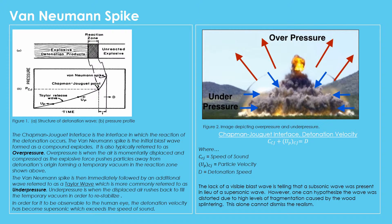First, what is an explosion? An explosion is the sudden release of energy from detonating a particular compound. It is best described using the Chapman-Jouguet interface, which describes how the exothermic reaction of the detonation occurs on a molecular level, resulting in an explosion. As seen in the graph, the Chapman-Jouguet point is the point at which the compound is burning at a rapid rate. The most interesting part of the detonation is the explosion it generates.